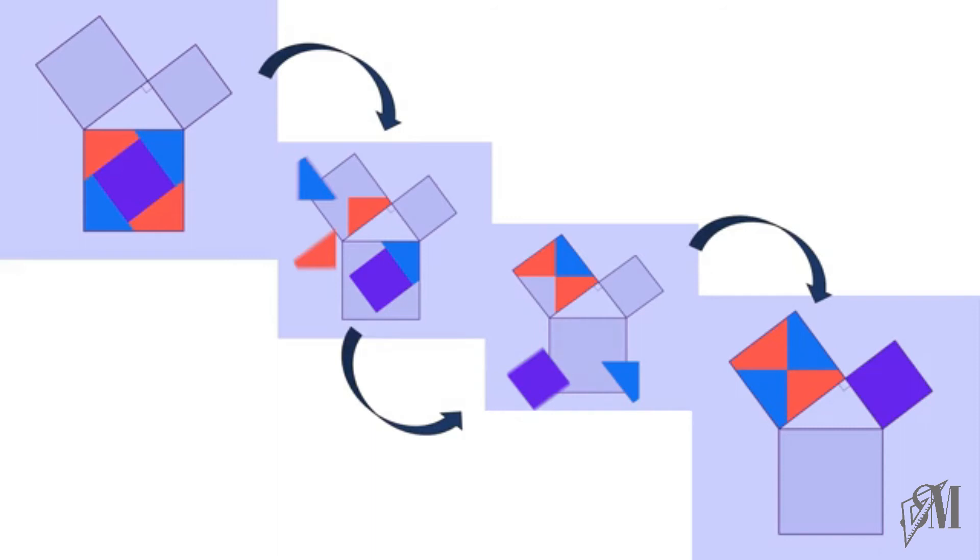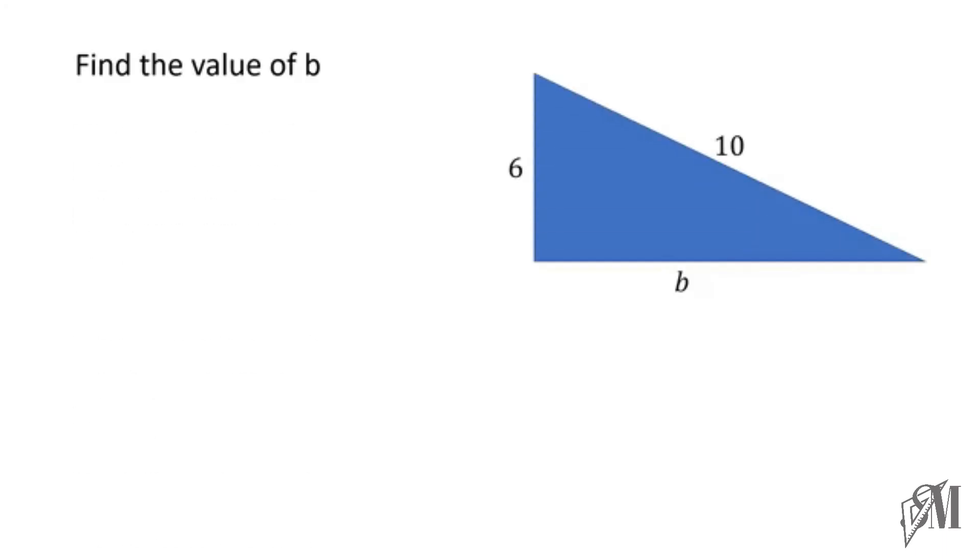Now let's move on to an example of how to work out a sum using the Pythagoras theorem. Look at this example—we have to find the value of b. Since this is a right-angled triangle, all we have to do is apply the Pythagoras theorem. According to the theorem, 6² + b² = 10².